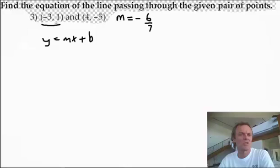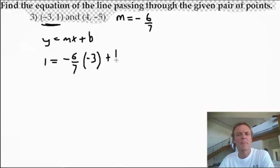Y equals mx plus b. Right, and I'll use these points here. So y is 1, and that equals, what's the slope? It's negative 6 7ths, that's what I found. What's x? It's negative 3. And I've still got plus b. There we go.